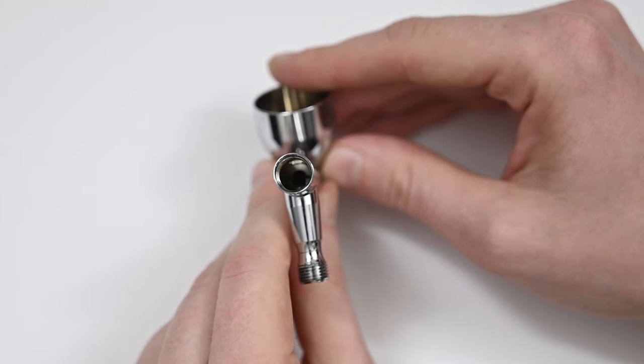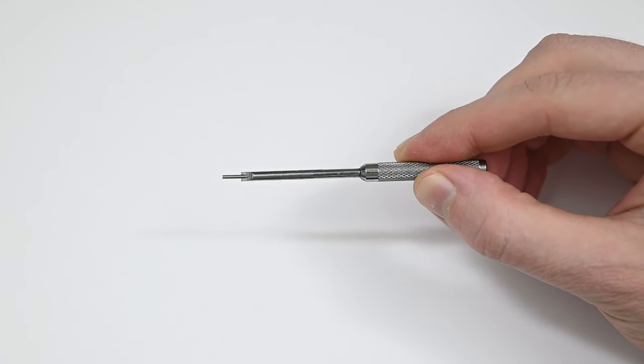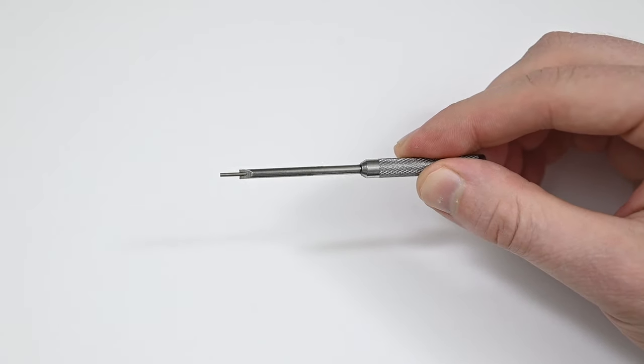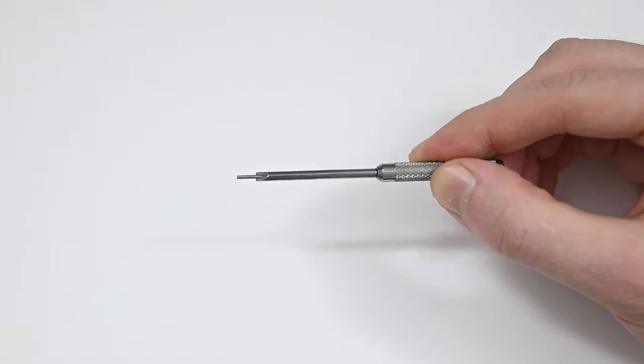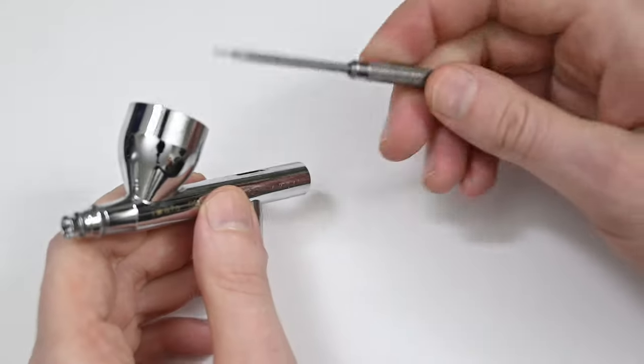I highly recommend picking up one of these special screwdrivers. You can see that it's a flathead screwdriver at the end, but it has this little point sticking out at the front. These are made for one purpose, and that's to adjust and remove that needle packing screw. I always have a few of these on hand. They go for like five bucks or so, and I'll have a link to this one down below.